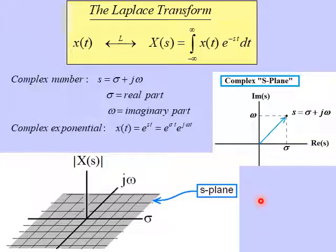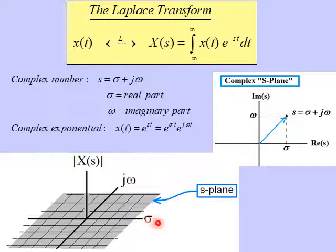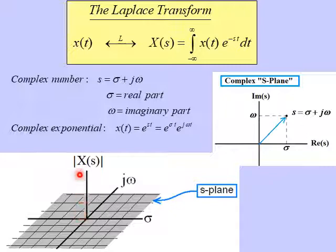Laplace Transforms are more difficult to plot than Fourier Transforms. The reason is that they are a function of s, and s has two dimensions: the real part sigma and the imaginary part j omega. So the s-plane takes up two dimensions, and if we want to plot the magnitude of a Laplace Transform, that would require a third dimension. We'll talk about this plotting more as we get further into this lecture.